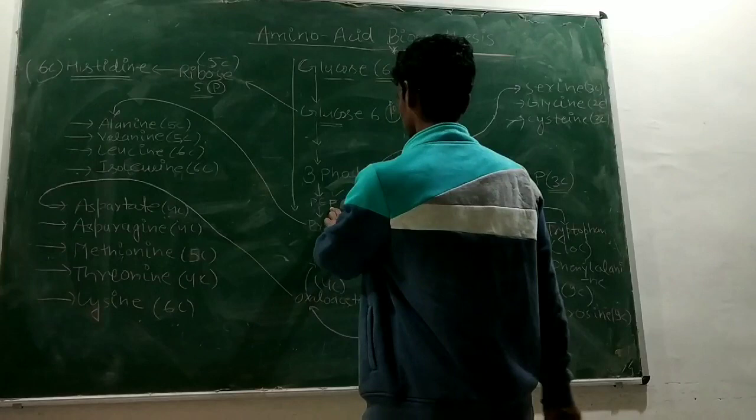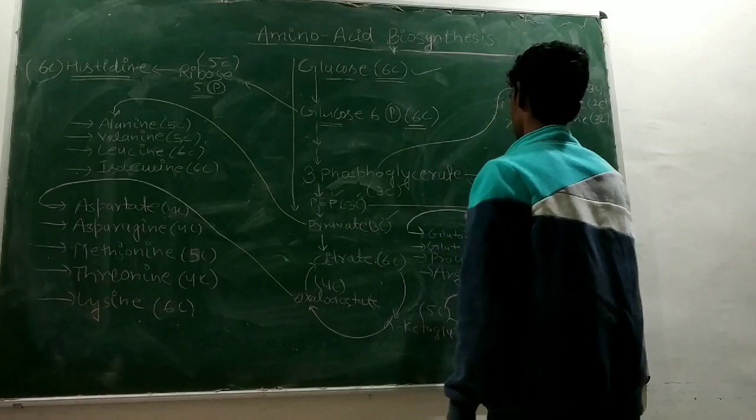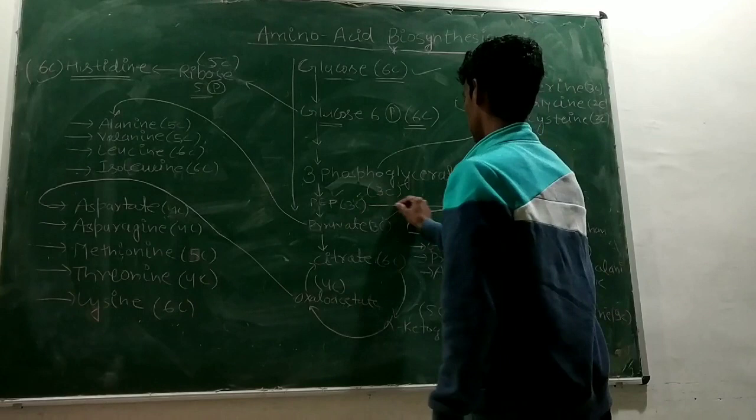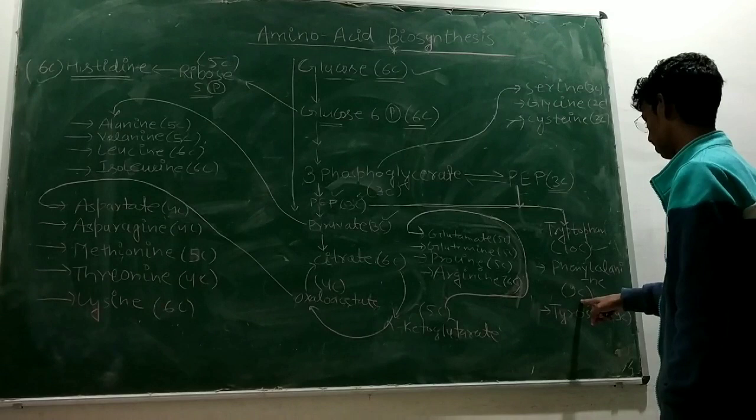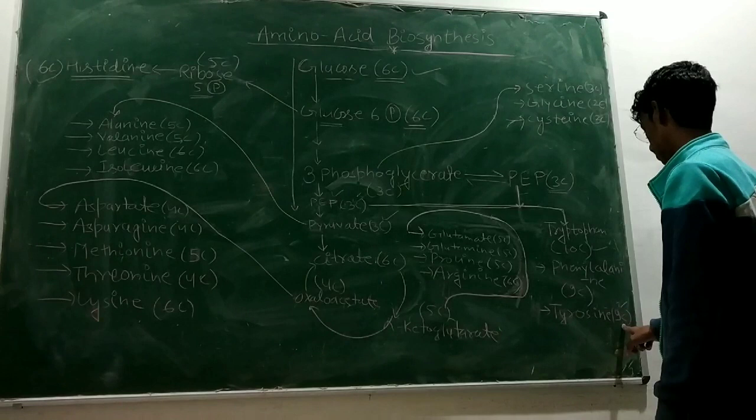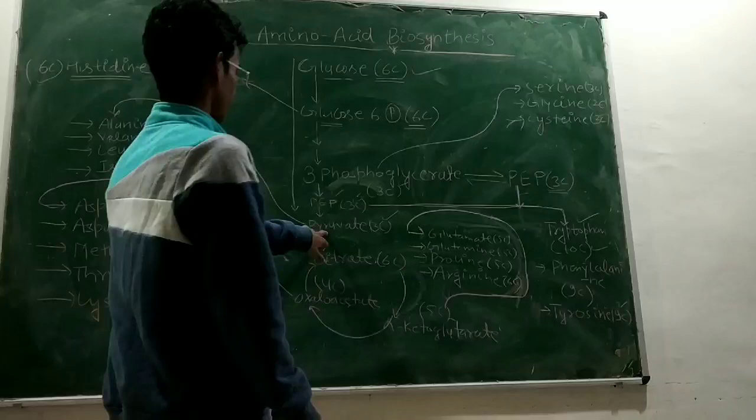We have 3-phosphoglycerate, which is a 3-carbon containing compound. The phosphoenolpyruvate compounds are converted. This is what is happening with phosphoenolpyruvate and amino acids.